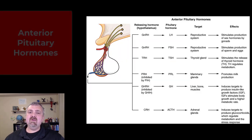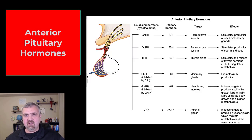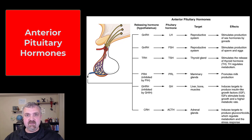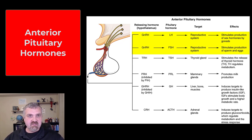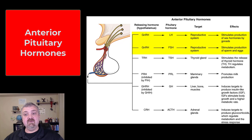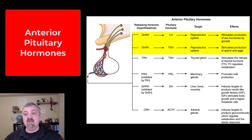The pituitary is primarily broken down into an anterior and posterior lobe, with a small intermediate zone between the two. The anterior pituitary hormones are actually produced by the anterior pituitary and then secreted throughout the body. First, we have the gonadotropins, which are controlled by gonadotropin-releasing hormone from the hypothalamus — those are luteinizing hormone and follicle-stimulating hormone, both targeting the male and female reproductive systems.